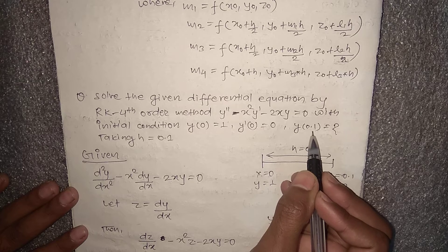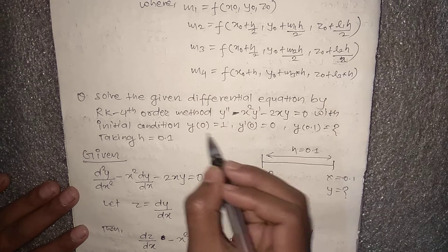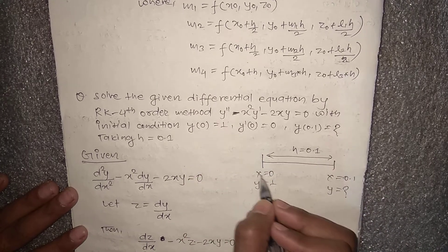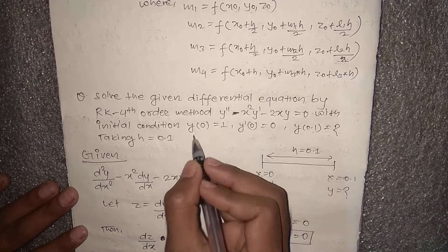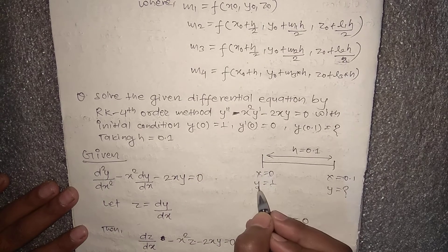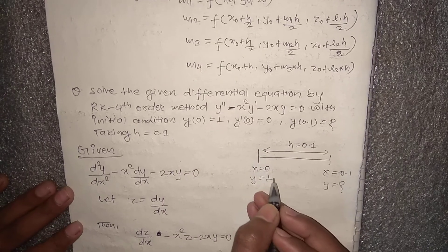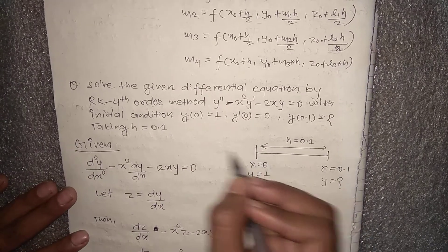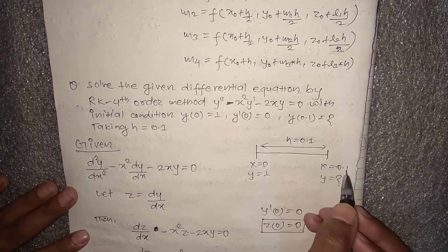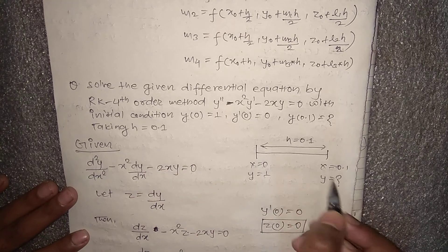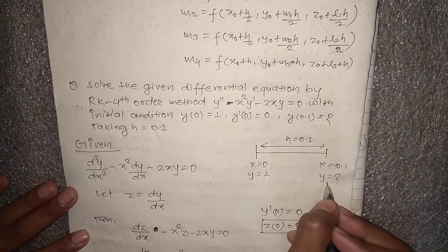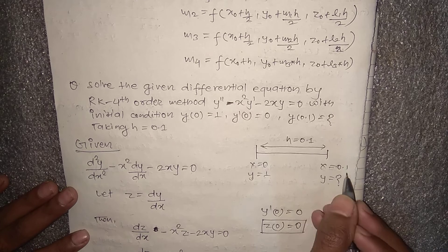We need to calculate the value of y at x = 0.1. The initial condition y(0) = 1 means at x = 0, y = 1. Since the step size is h = 0.1, we move to x = 0.1 and need to calculate the corresponding y value.